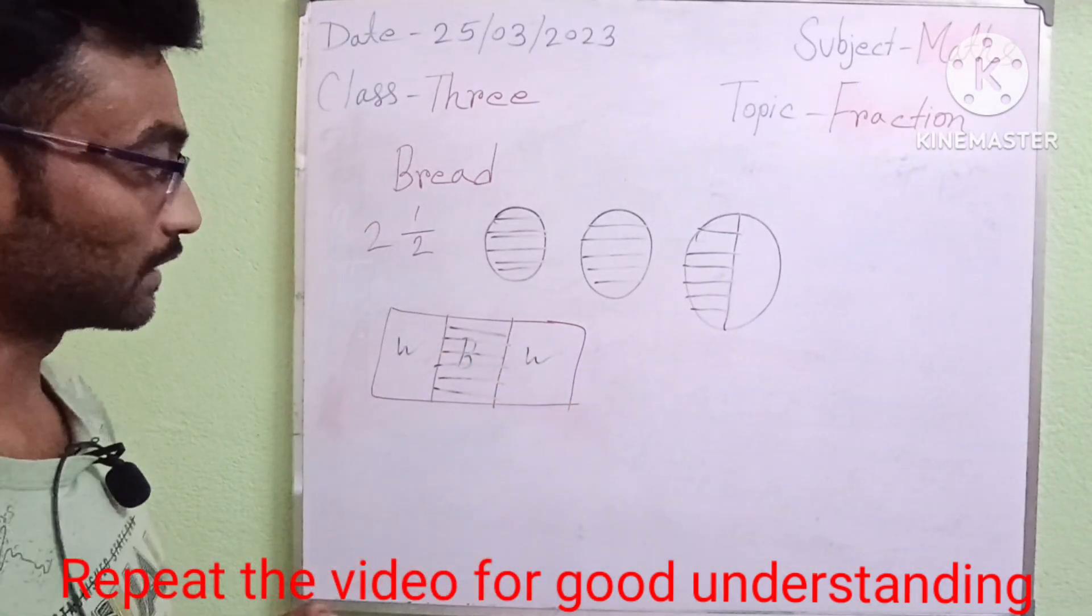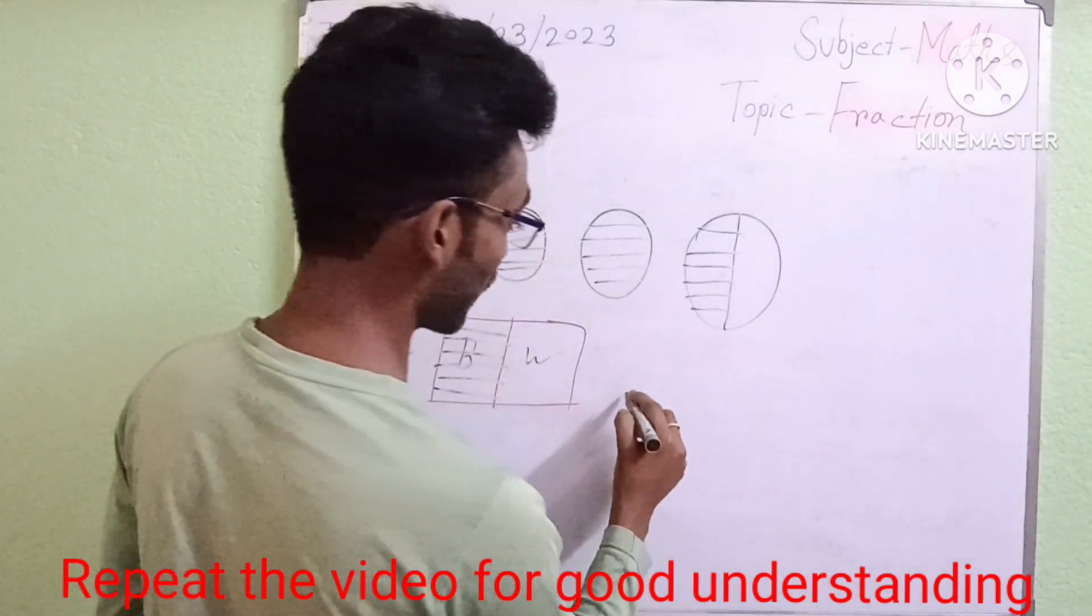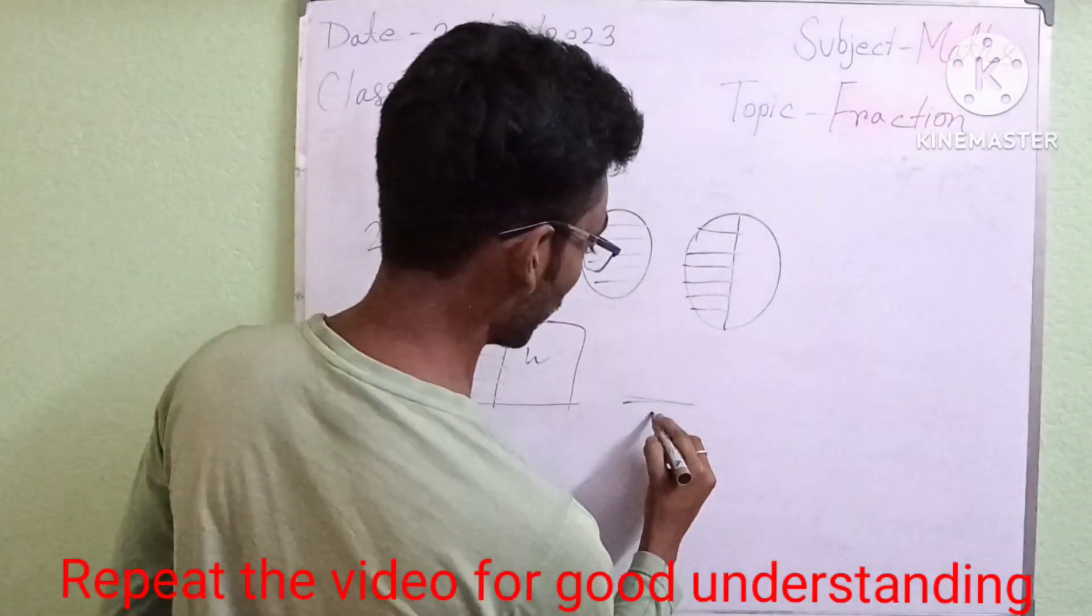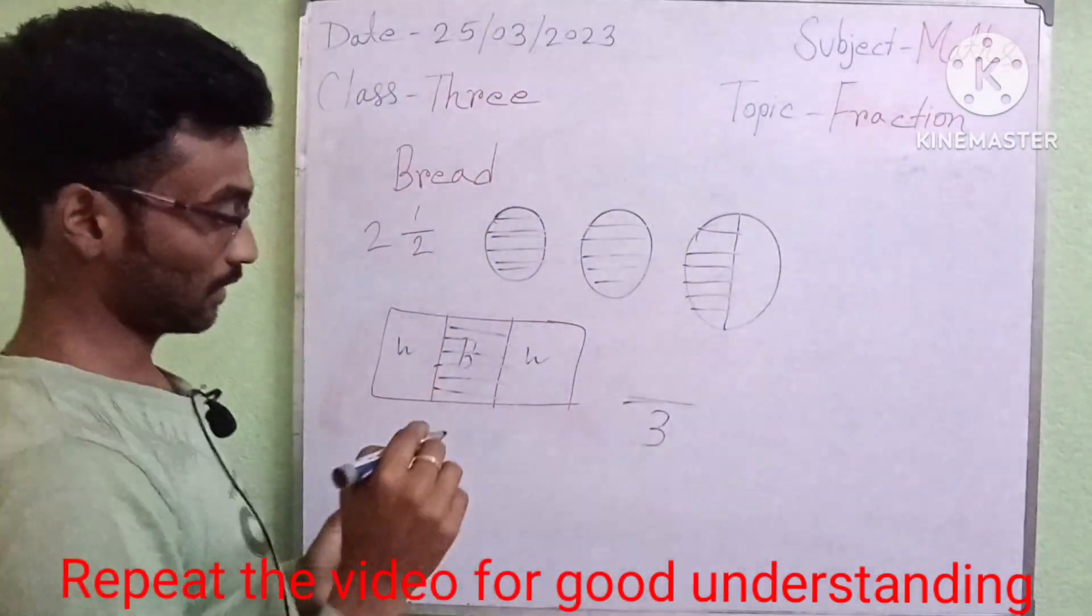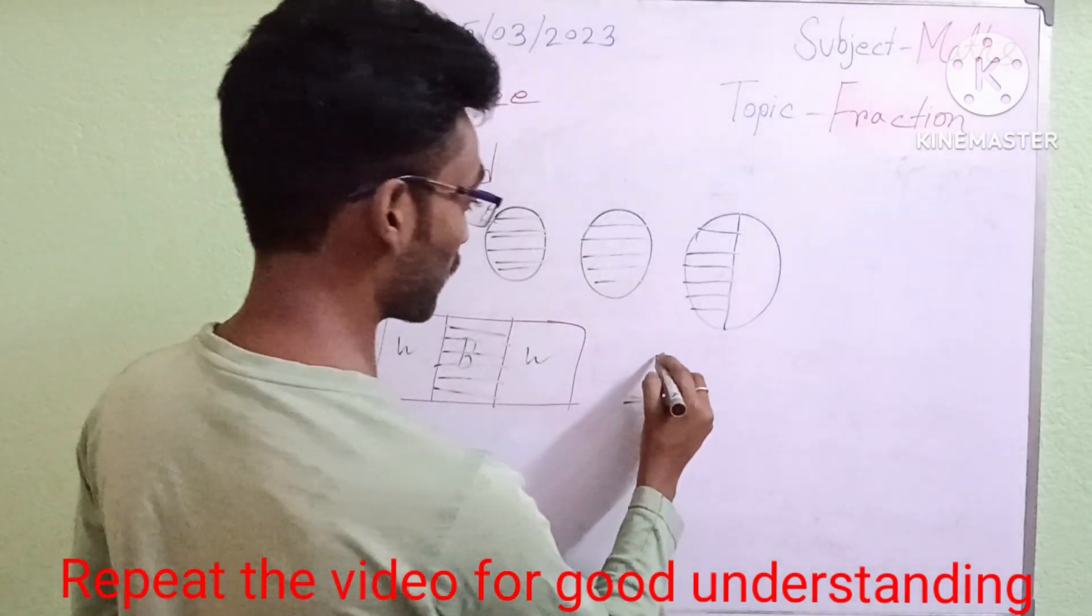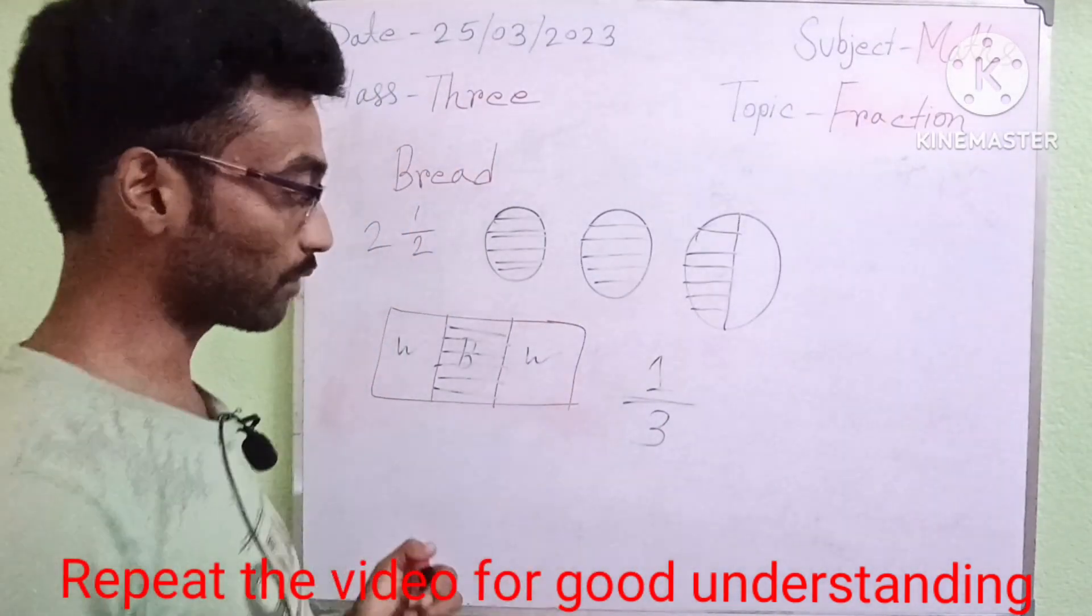Then if we want to express this in our mathematical order, we will write it like this. Totally we have divided in three parts, and this black part is one. Then we will write it one by three.